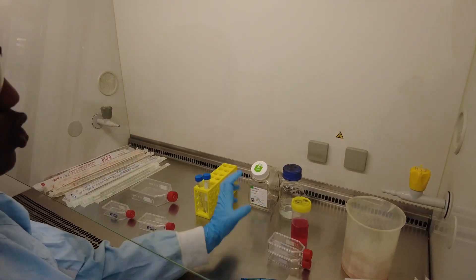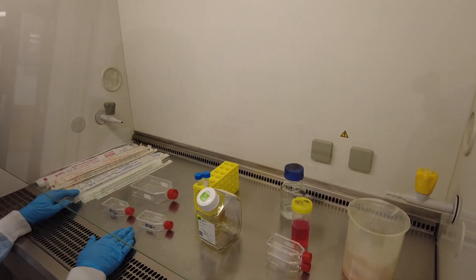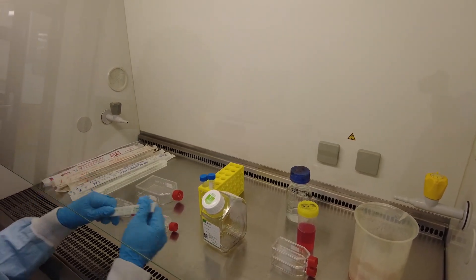Then we're going to add trypsin. Trypsin is going to help lift the cells off of the bottom of the flask. I'll put about two milliliters into each of trypsin.